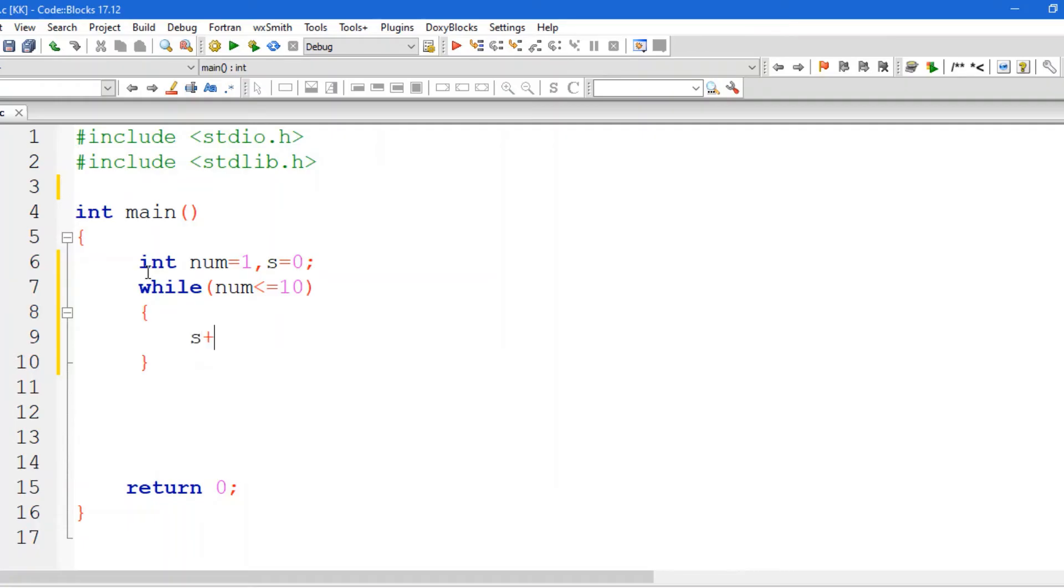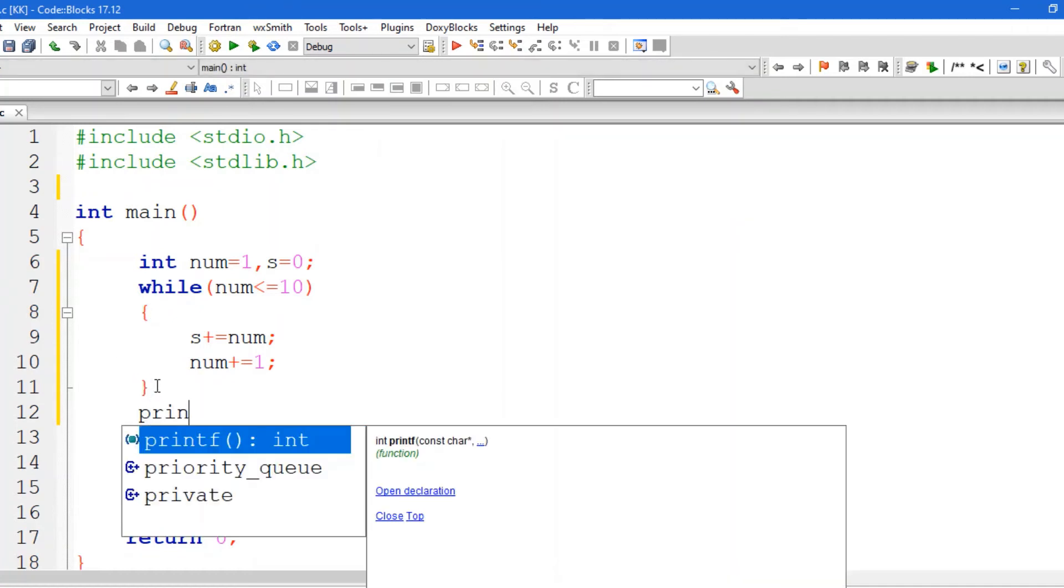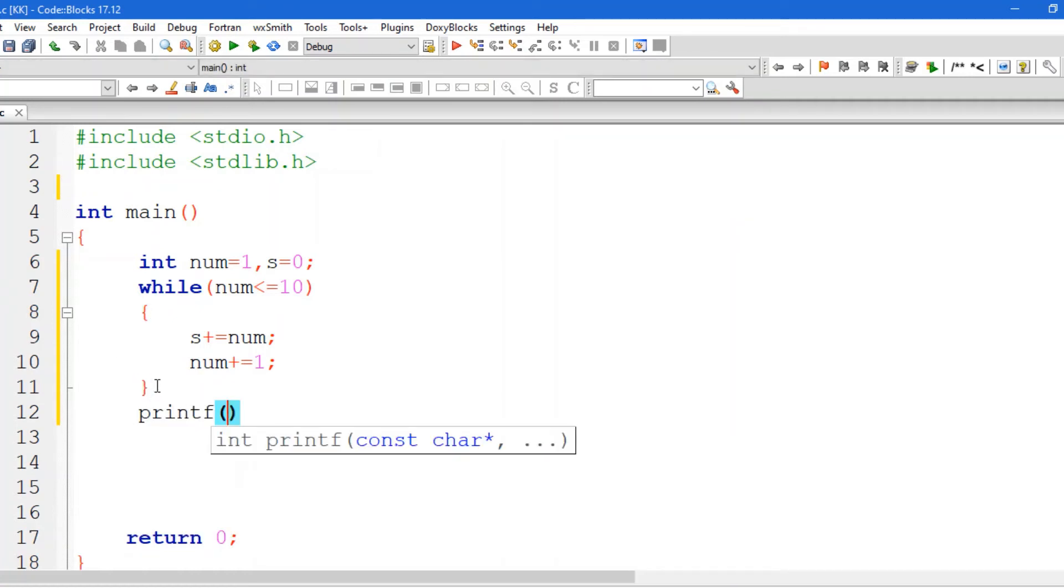Num will be less than or equal to 10. And here we will add s equal to s plus num, and then num plus 1, num plus equal to 1. And then here we will print out, we will get the output. The result will be sum of first 10 natural numbers.